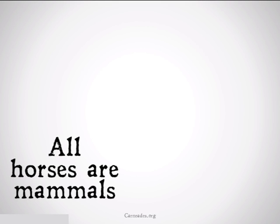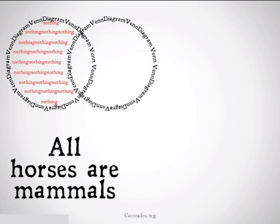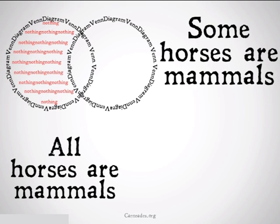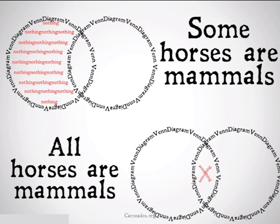If I take the statement 'all horses are mammals,' my Venn diagram would look like this. I shade in the area of horses that are not also mammals. It might seem that we could, from this statement, conclude that some horses are mammals. That would look like this. If we were using Aristotelian logic, this inference would be allowed.